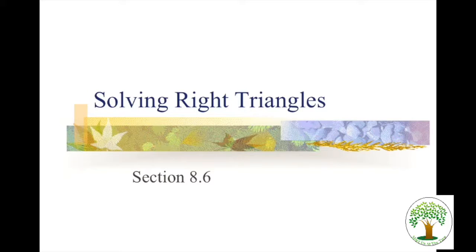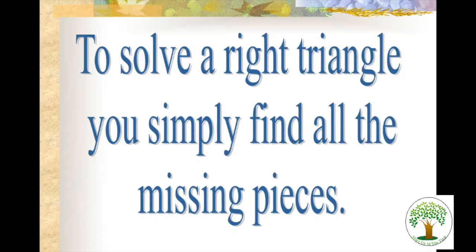So we're going to be talking about solving right triangles. This is section 8.6. To solve a right triangle, you simply find all the missing pieces. So if it asks you to solve a right triangle, you need to know the measures of all the angles and all the sides.